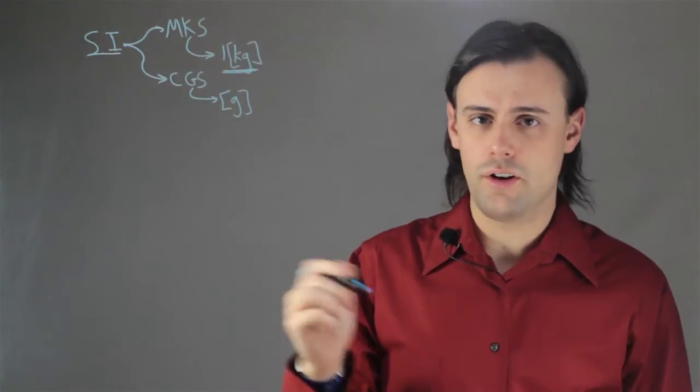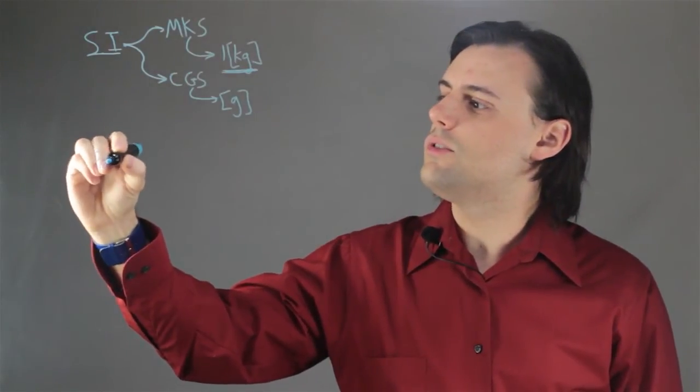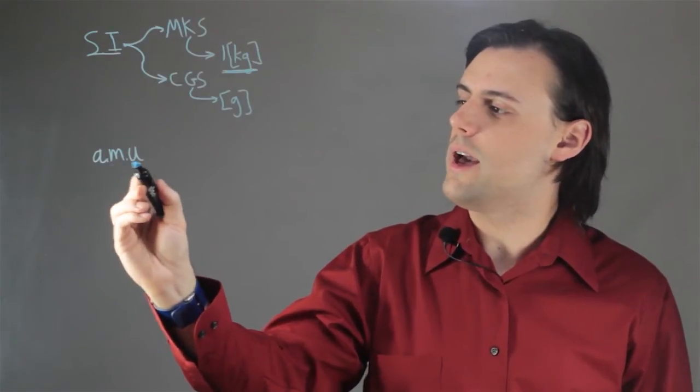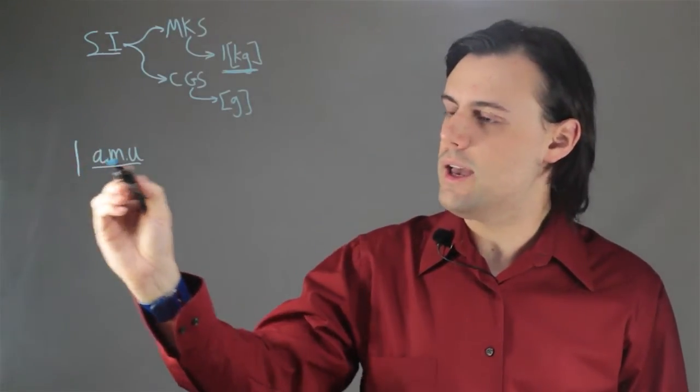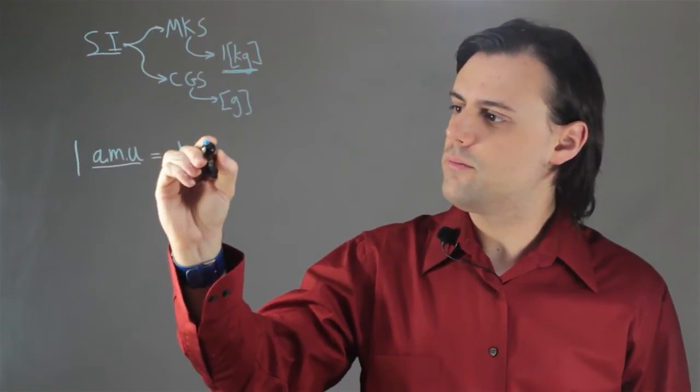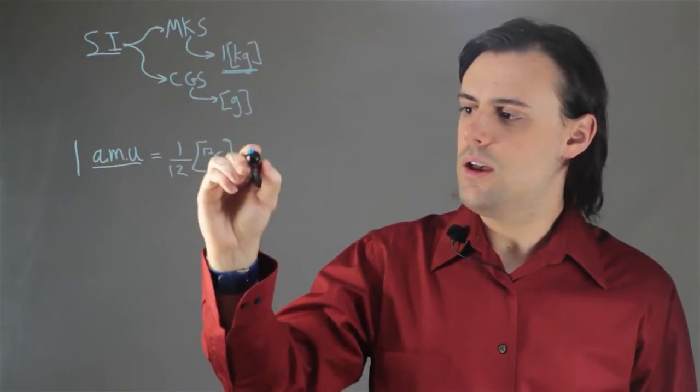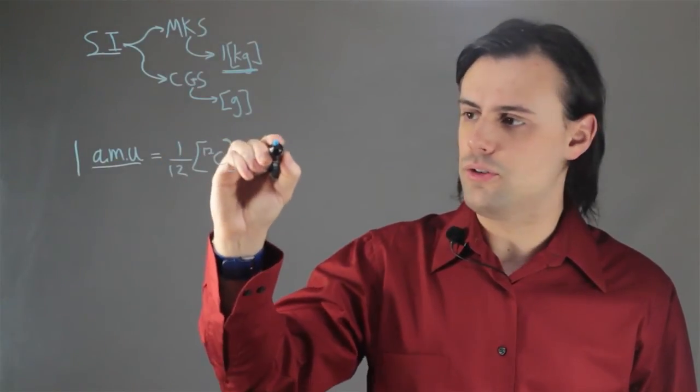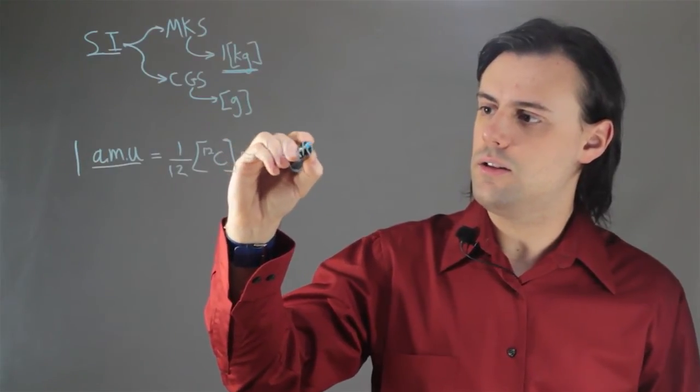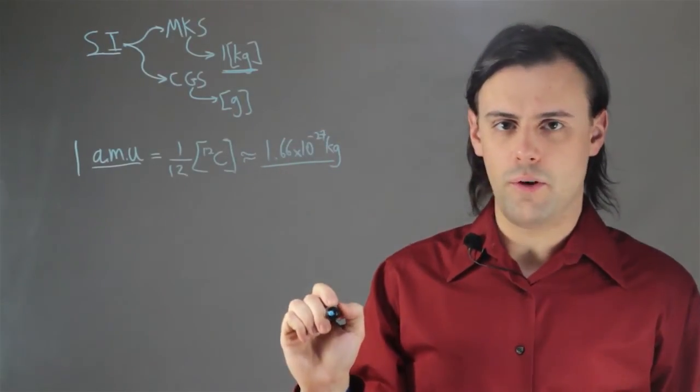If we consider atomic systems or in chemistry we would like to use the units of atomic mass units or AMU for short. And one AMU is defined as one twelfth of the mass of a carbon-12 atom. And this is approximately equal to 1.66 times 10 to the negative 27 kilograms. So it's a very small number.